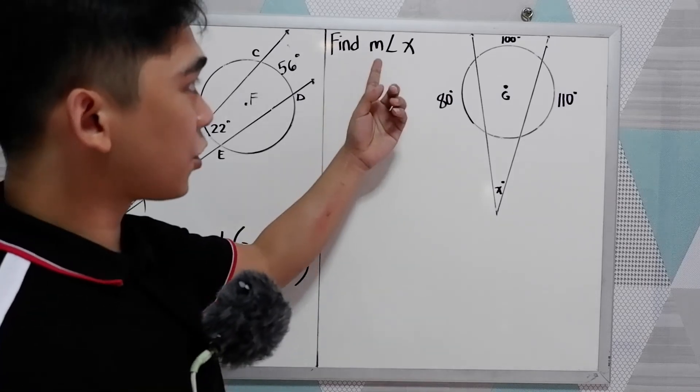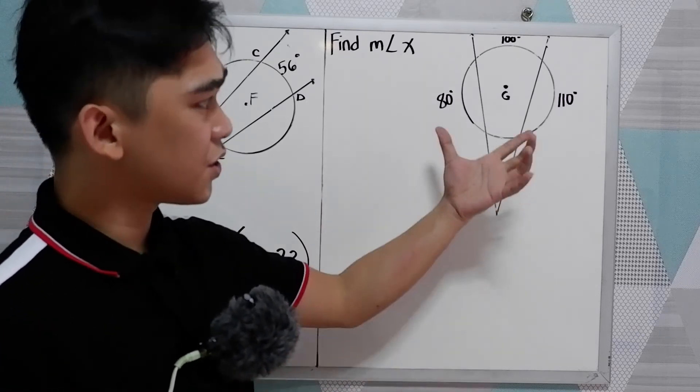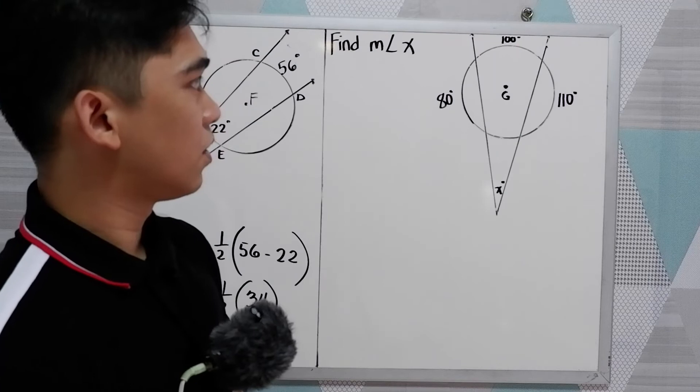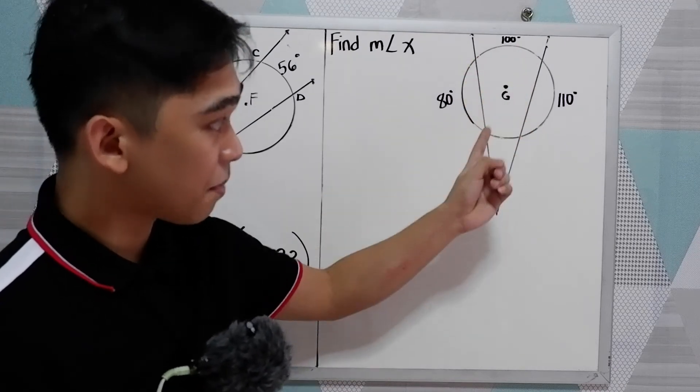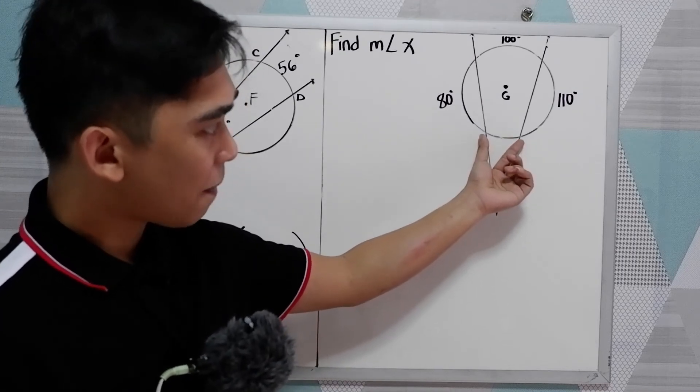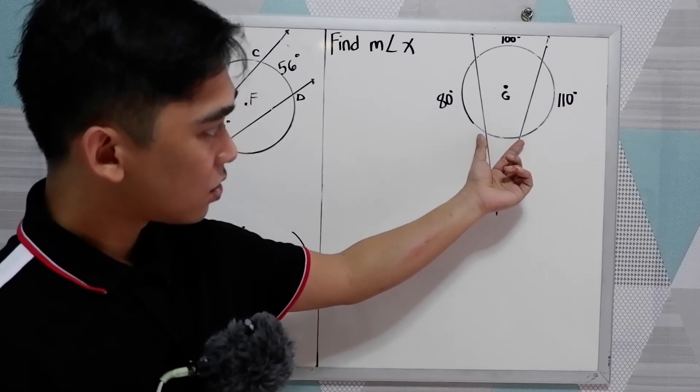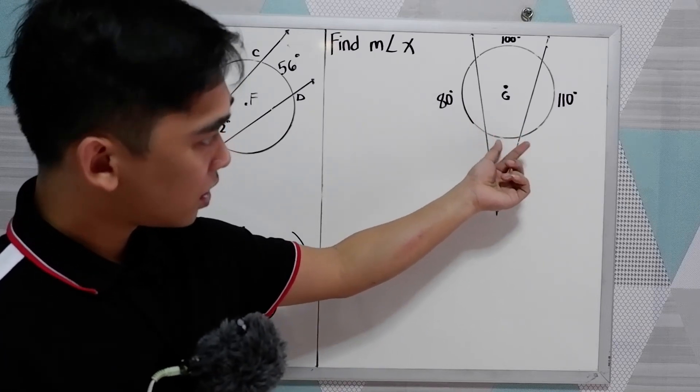Next, find measure of angle X. So we study the given circle. In order to use our theorem, the intercepted arcs must be given. In this case, we don't have the measure of this arc. So first step, we need to find the measure of this arc.